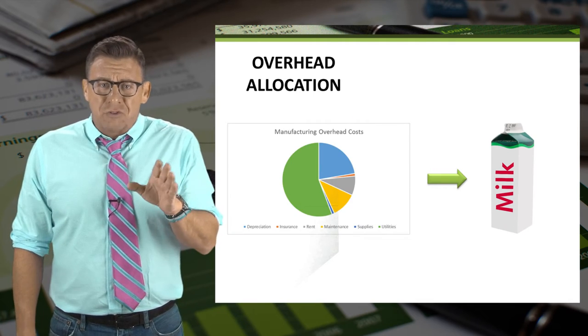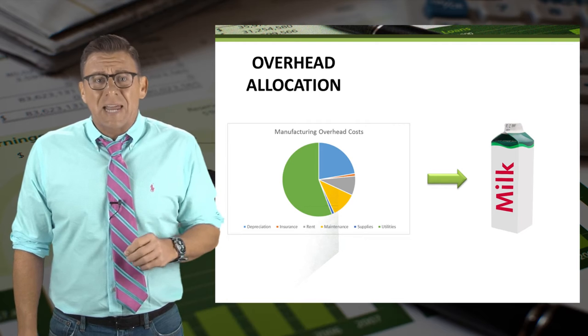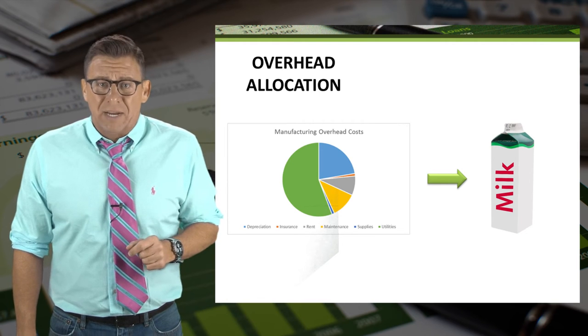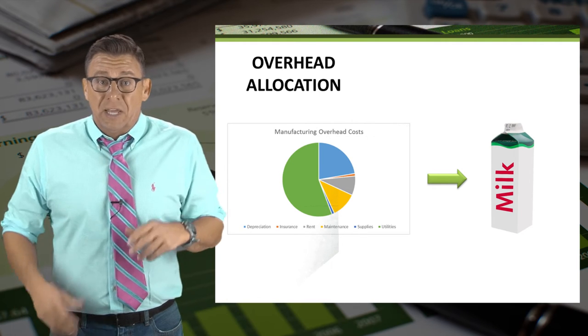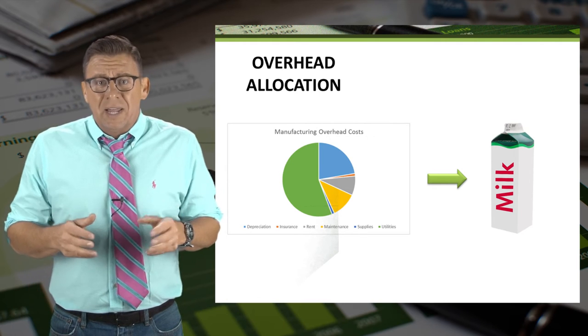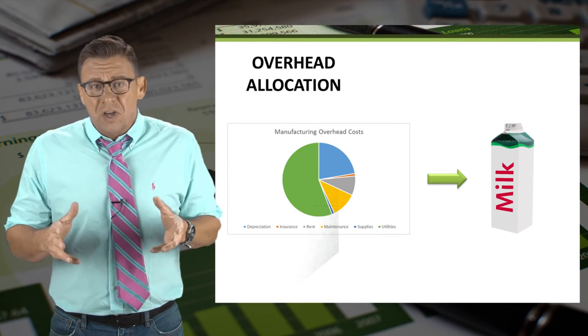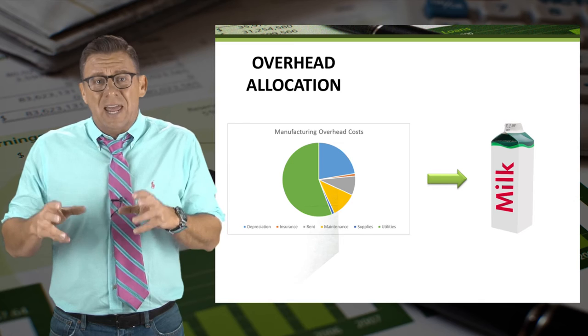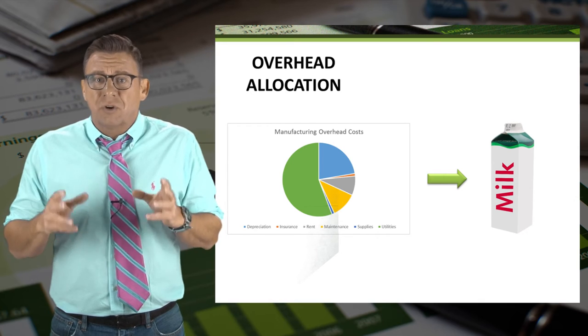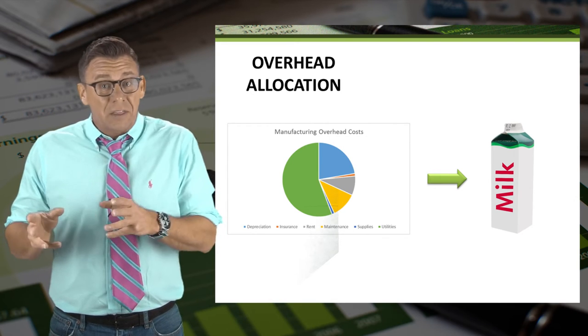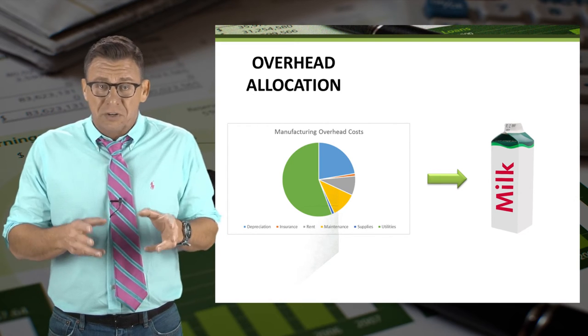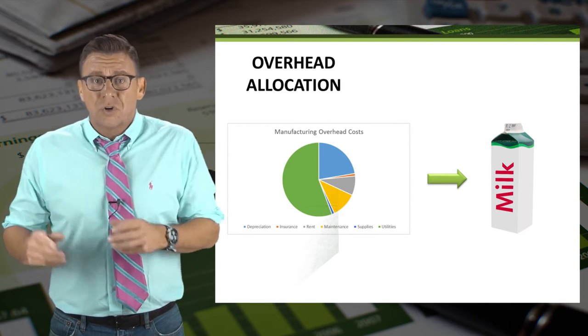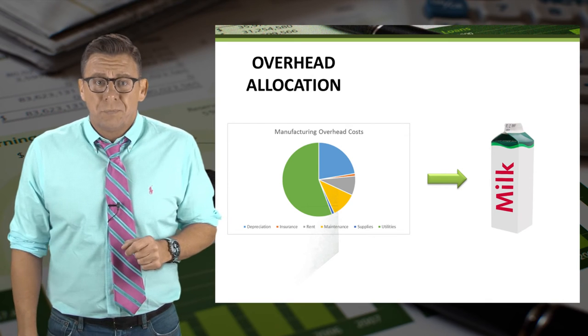Manufacturing overhead is slightly more complicated. In short, it is all the costs in a manufacturing plant that aren't either direct materials or direct labor.